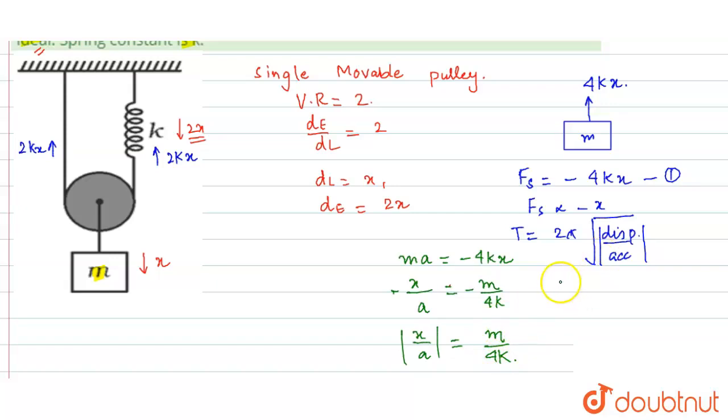Now let us put the values and find the time period. So this is simply 2π under root m divided by 4k second. So this will be the time period of this spring mass system. I hope you understood the explanation. Thank you.